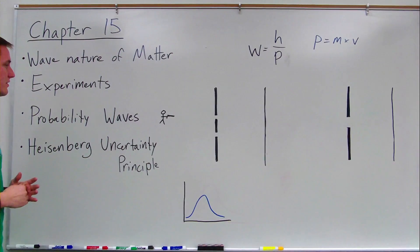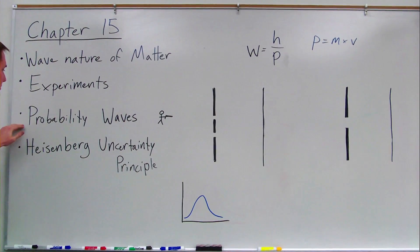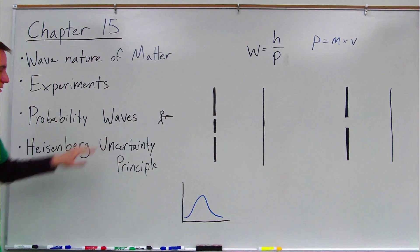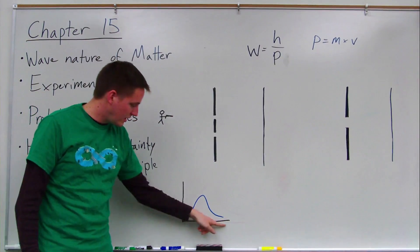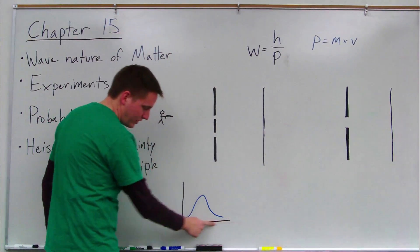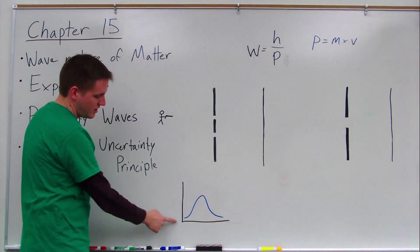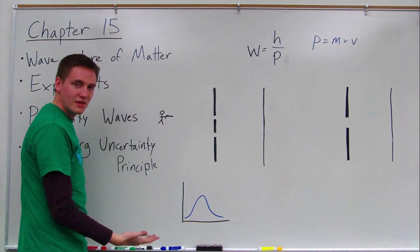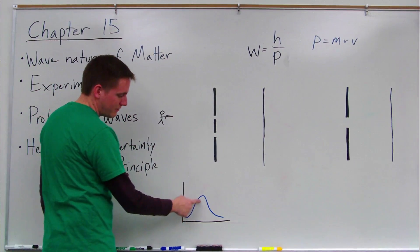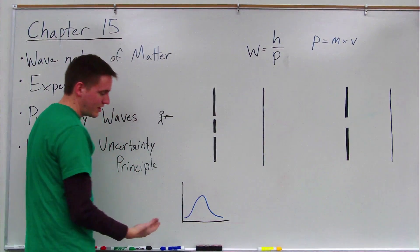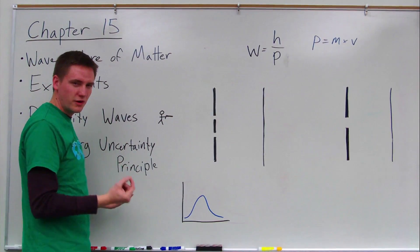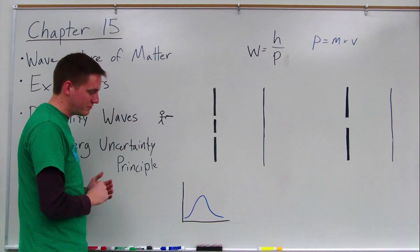Next we're going to skip down and talk about probability waves, probability curves. We have a chart like this, the x-axis down here we can think about as position, and the y-axis here as frequency. We have a curve like this, we're going to be talking about the probability of where we can find these particles that we're talking about, these particles of matter.